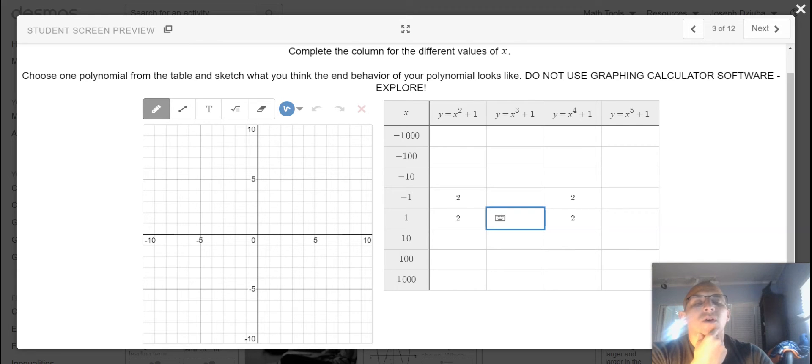Now with our cubic x to the third plus one and our fifth degree function, when we substitute negative one into the function, negative one to the third power is negative one plus one is zero.